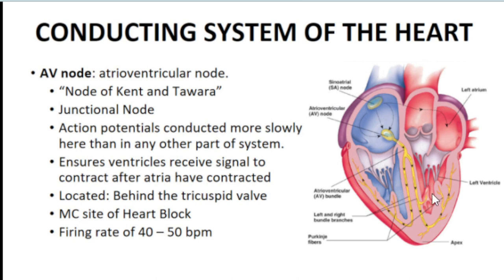The AV node is located behind the tricuspid valve and is the most common site of heart block. In cases where the SA node is damaged, the AV node will take over as a backup pacemaker — however, its firing rate is only 40 to 50 beats per minute.